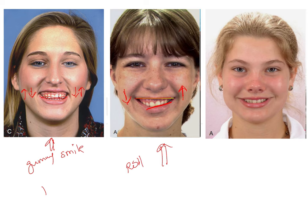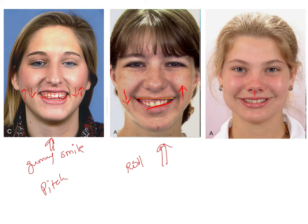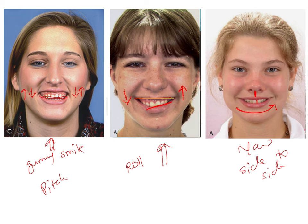Finally, yaw is the side-to-side rotation seen along the occlusal plane. Unlike pitch and roll, which involve up and down deviation, yaw involves a side-to-side rotation. Clinically, this appears as if the entire dentition has rotated in one direction — for example, towards the left of the patient — resulting in a discrepancy between the facial midline and the dental midline of the patient.